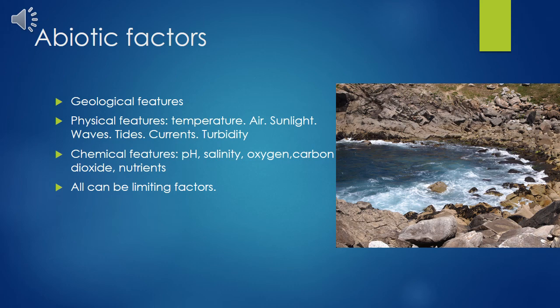We earlier talked about limiting factors — any of these abiotic factors can be a limiting factor. For example, looking at the growth of phytoplankton, either sunlight or nutrients will very likely be the limiting factor for the amount of phytoplankton growing in an area. Or if you look at mussels living on a rocky coast, waves and tides can be the factors limiting the size of the population.